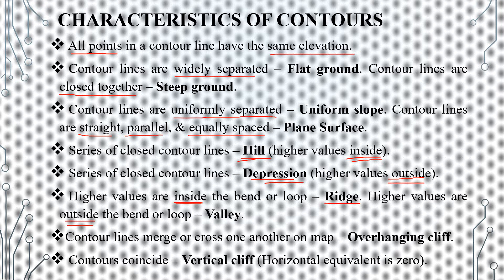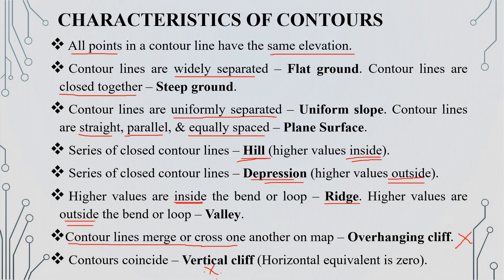The next important feature is the overhanging cliff and the vertical cliff. In the overhanging cliff case, contour lines cross. In the vertical cliff case, contour lines coincide. For a vertical cliff, the horizontal distance is zero.